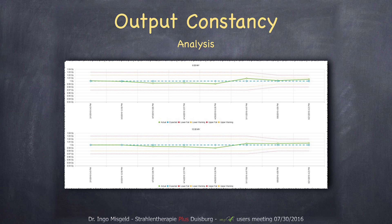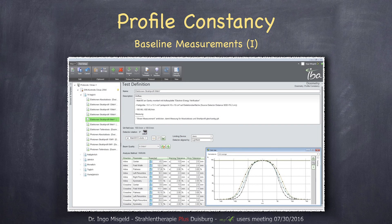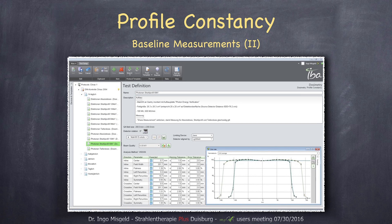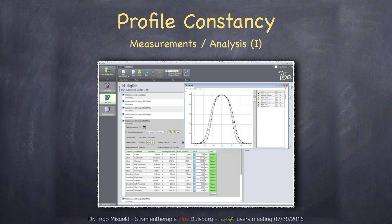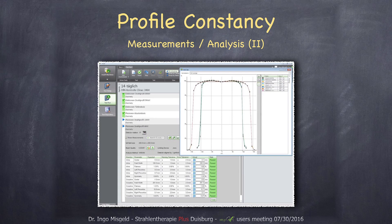The next point is the profile constancy task. Once again the baseline measurements have to be performed first. There you can already display your profile — there's a button you can press to directly see how your profile looks. This is for electrons. These are the photon profiles: inline, cross-line, and the diagonal profiles. The measurement works the same way, and you have the pass and failed status for every parameter. You can also display your profile right after the measurement.